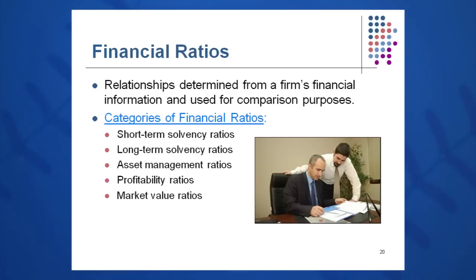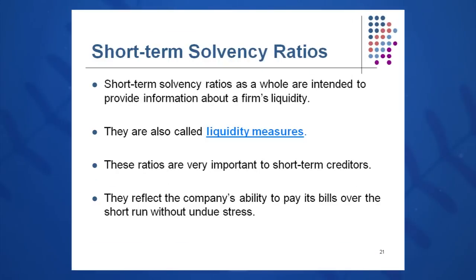We're going to break these ratios into five categories. The first category we're going to look at are short-term solvency ratios. These are basically liquidity measures — how liquid is the company? We said in the last session that one of the goggles we put on when looking at a balance sheet is liquidity. How fast can we turn assets into cash without loss of value? These ratios are very important to short-term creditors, and they look at the company's ability to pay their bills very quickly.